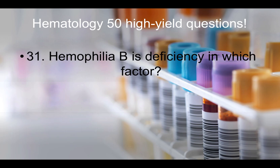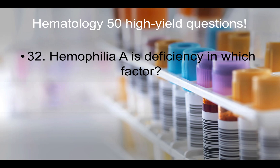Question thirty-one: Hemophilia B is the deficiency in which factor? That would be factor 9. Question thirty-two: Hemophilia A is the deficiency in which factor? That would be factor 8. The mnemonic: 8A, 9B — just in alphabetical order. Factor 8 = hemophilia A; factor 9 = hemophilia B.